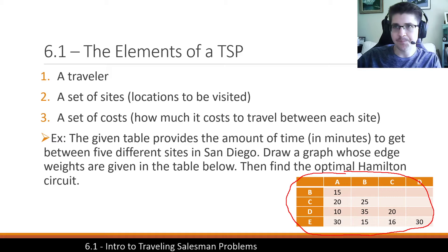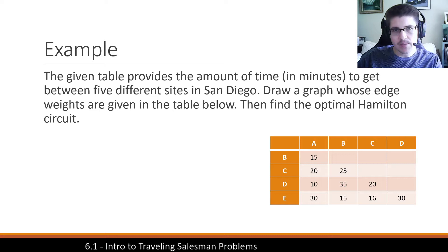So let's look at an example. The given table provides the amount of time in minutes to get between five different sites in San Diego. Draw a graph whose edge weights are given in the table below, then find the optimal Hamilton circuit. Basically, if we're trying to solve these problems, let's start with an example and look at how we find it.